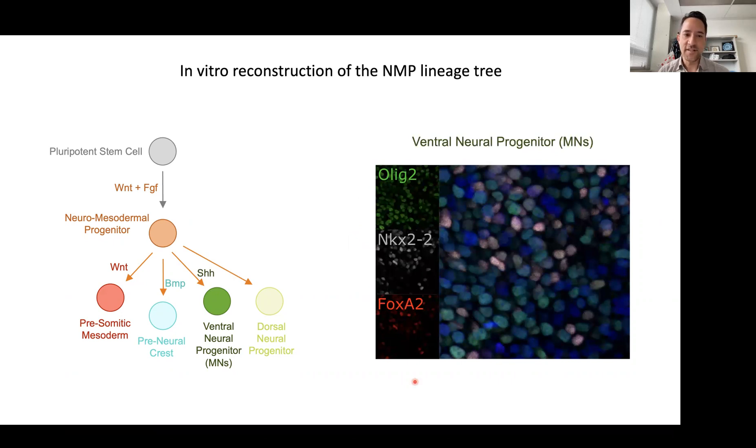We can drive the sonic hedgehog signaling pathway to ventralize neural progenitors. Here you see the motor neuron progenitor marker OLIG2, another ventral marker NKX2.2, or the floor plate marker FOXA2.